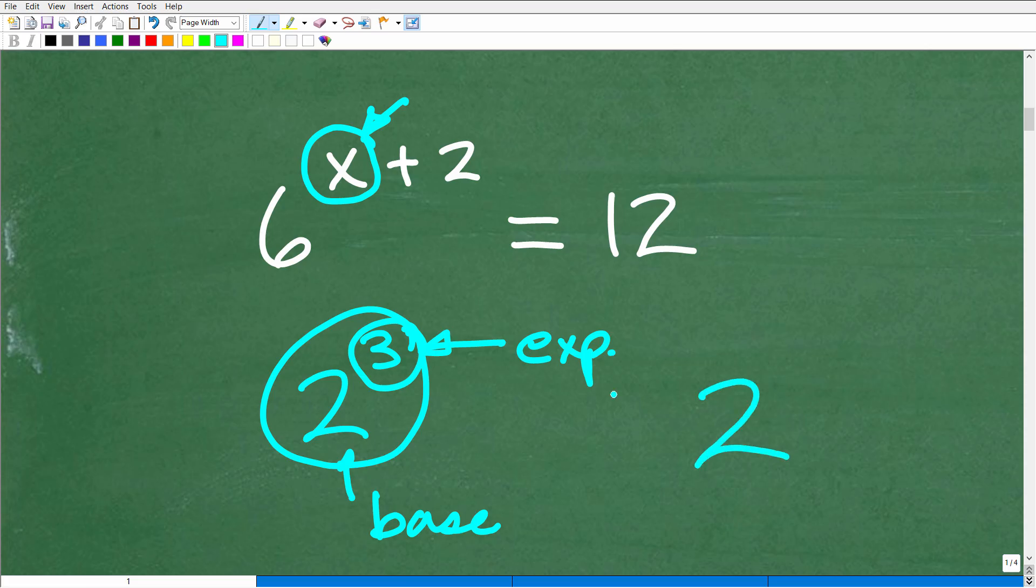So if I have an unknown value, here I have 2 to the third. If I have 2 to the x and I'm looking for what x is equal to, well, I'm trying to solve an exponential equation.